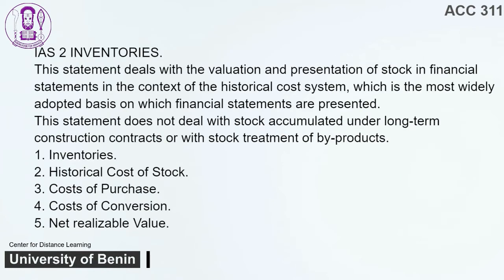IAS 2 — Inventories. This statement deals with the valuation and presentation of stock in financial statements in the context of the historical cost system, which is the most widely adopted basis on which financial statements are presented. This statement does not deal with stock accumulated under long-term construction contracts or with the stock treatment of by-products. Topics include: 1. Inventories. 2. Historical cost of stock. 3. Costs of purchase. 4. Costs of conversion. 5. Net realizable value.